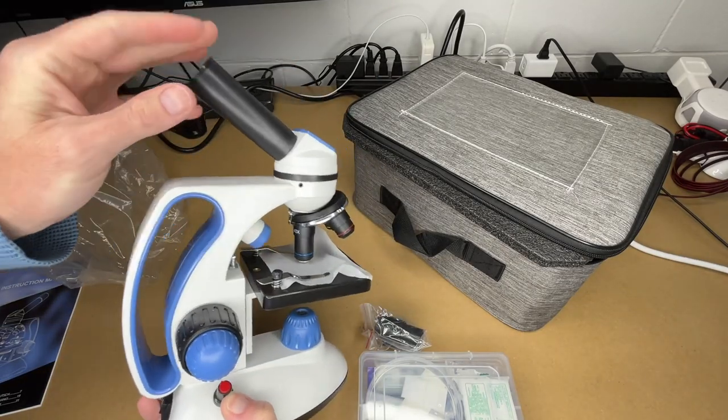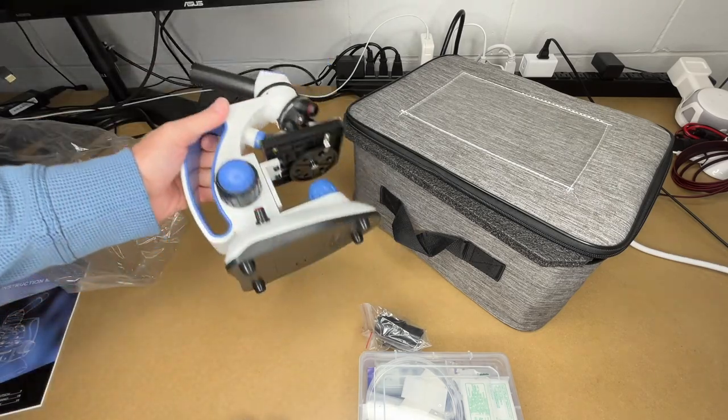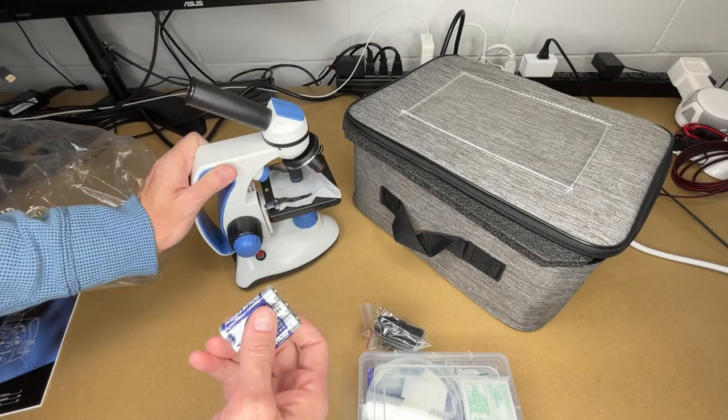Looks like an eyepiece cover there. So there's the microscope. It's made of metal, has a nice handle on it. The batteries will go in the bottom. Let me get those installed.